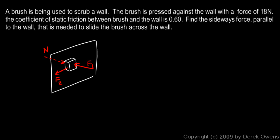F2 is what we're trying to find. Find the sideways force parallel to the wall that is needed to slide the brush across the wall. Well if we're sliding the brush across the wall then we're having to overcome the force of friction which is opposite that. So we need to find the force of friction and that should be easy because we can just use this equation f = μN.